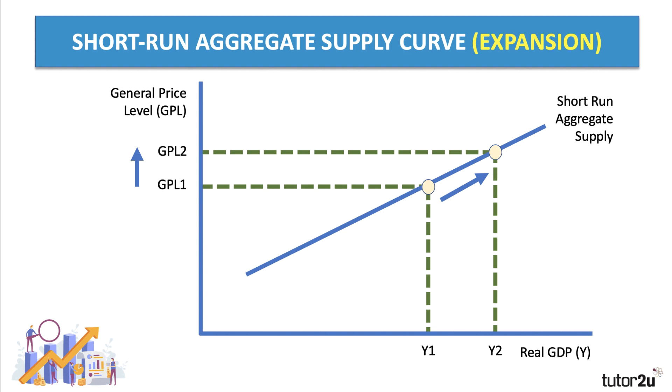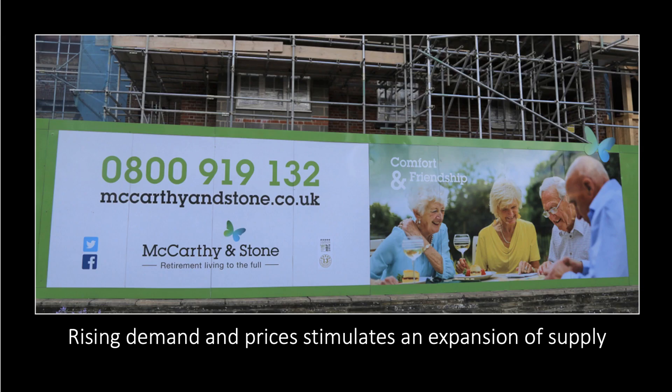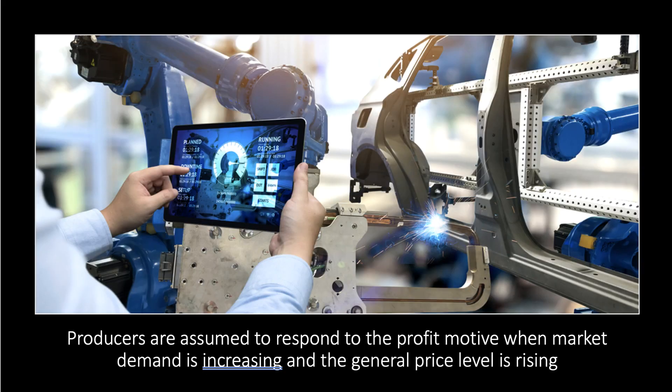A rise in the general price level is a stimulus for an expansion of short-run production in the economy. This builds on microeconomics: when demand and prices go up, it stimulates an expansion of supply. For example, increased demand for care homes pushes up demand and prices in that sector, bringing about increased investment and construction. Producers are assumed to respond to the profit motive — from car making to construction to the oil and gas sector — in aggregate, producers respond to higher demand.